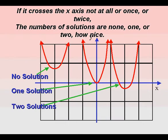If it crosses the x-axis, not at all, or once, or twice, the numbers of the solutions are none, one, or two. How nice.